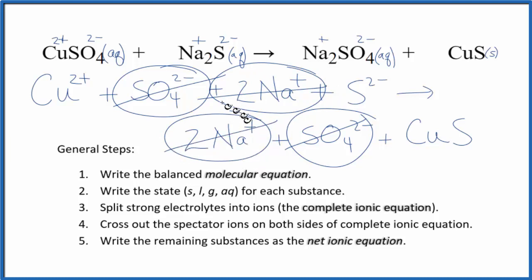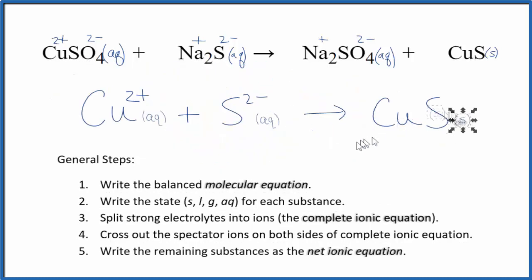What's left is the net ionic equation for CuSO4 plus Na2S. I'll clean it up, write the states, and we'll have our net ionic equation. And this is the balanced net ionic equation for copper(II) sulfate plus sodium sulfide.